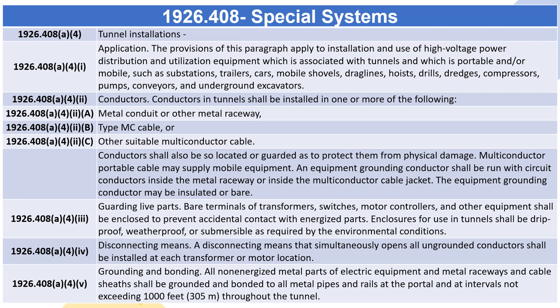1926.408(A)(4)(iv) — Disconnecting Means. A disconnecting means that simultaneously opens all ungrounded conductors shall be installed at each transformer or motor location. 1926.408(A)(4)(v) — Grounding and Bonding. All non-energized metal parts of electric equipment and metal raceways and cable sheaths shall be grounded and bonded to all metal pipes and rails at the portal and at intervals not exceeding 1,000 feet (305 meters) throughout the tunnel.